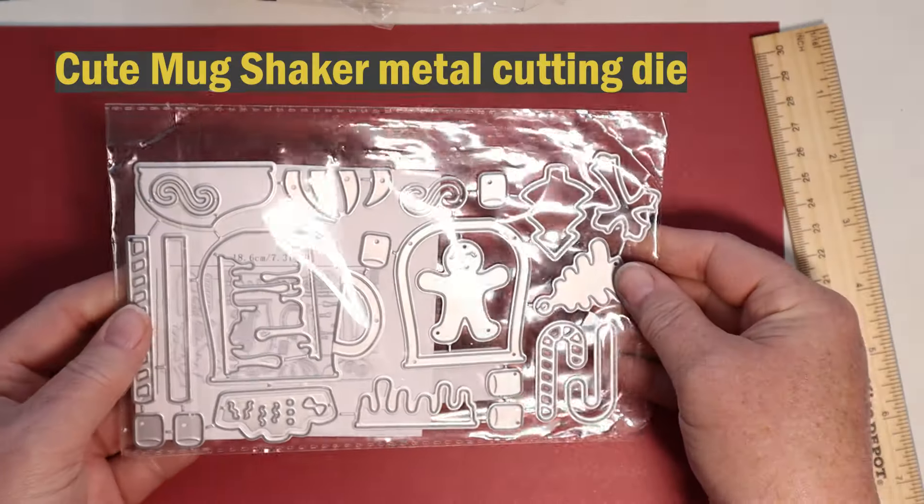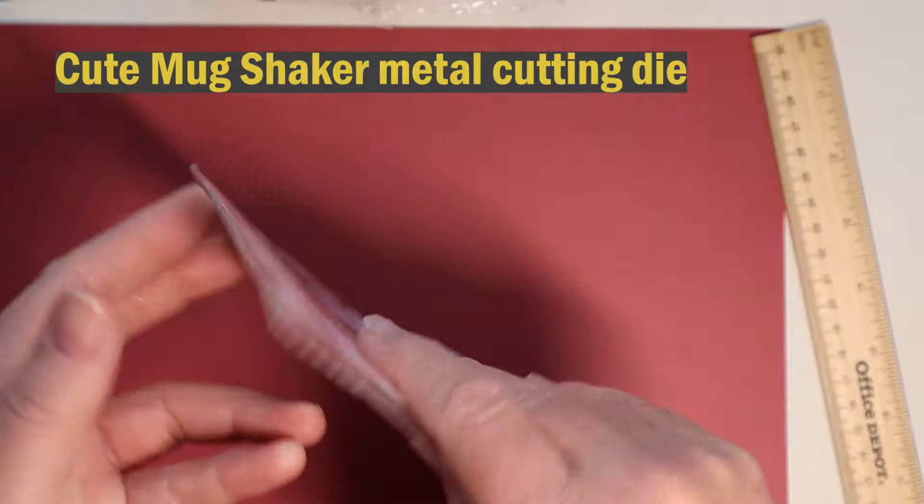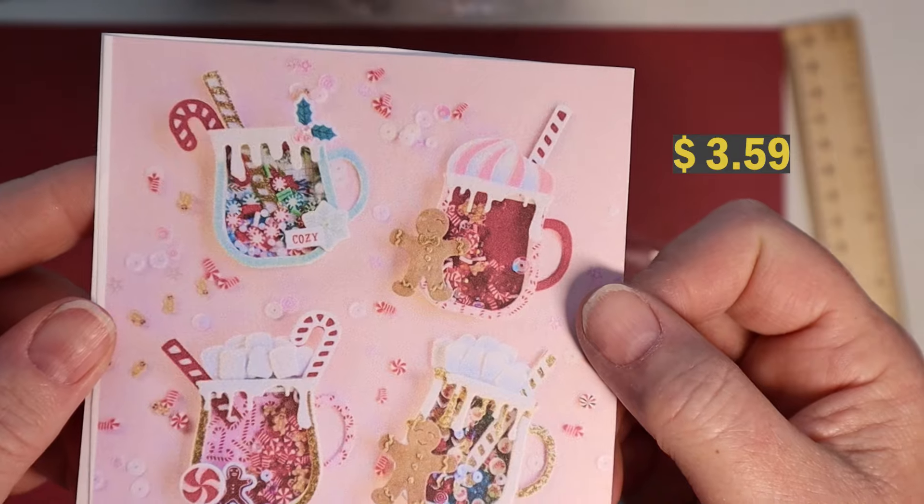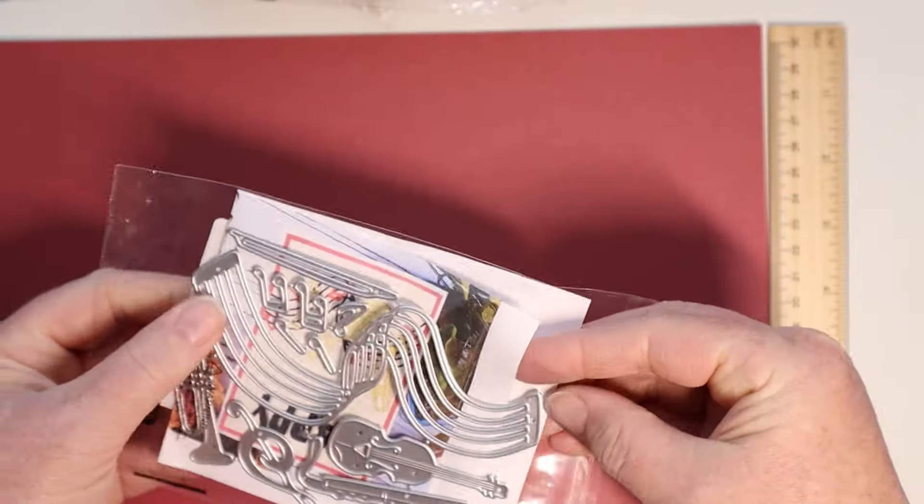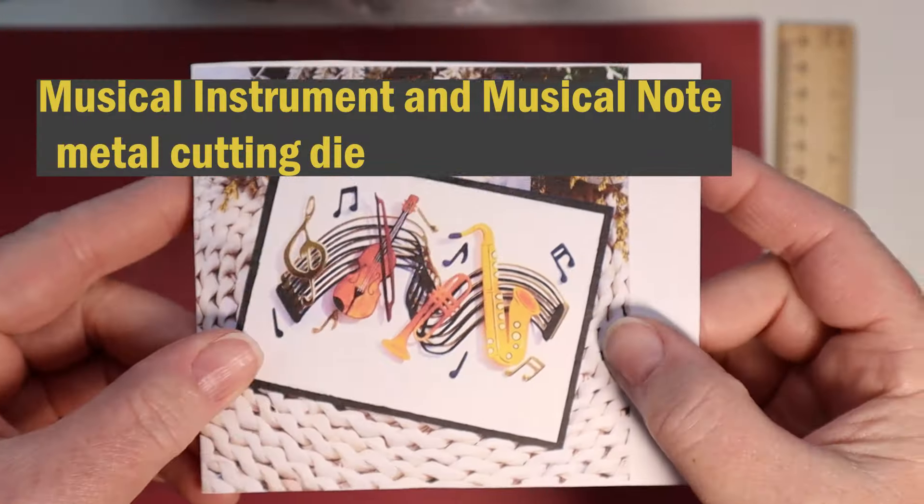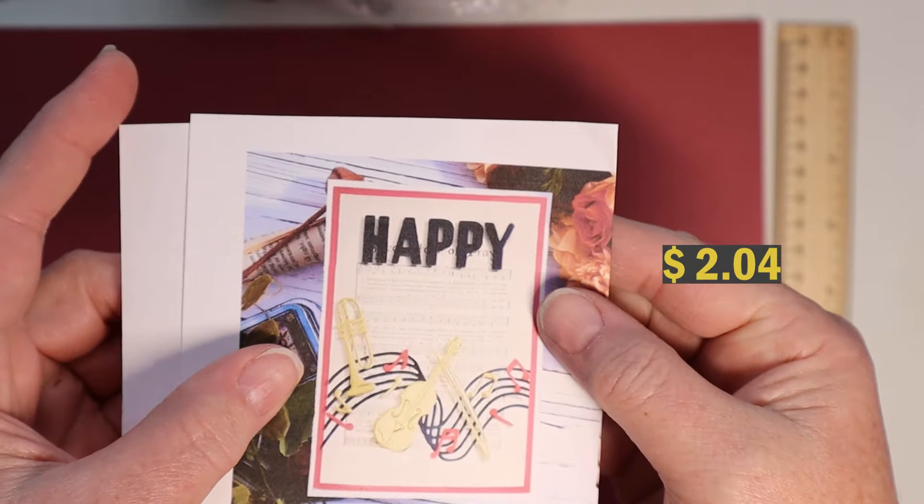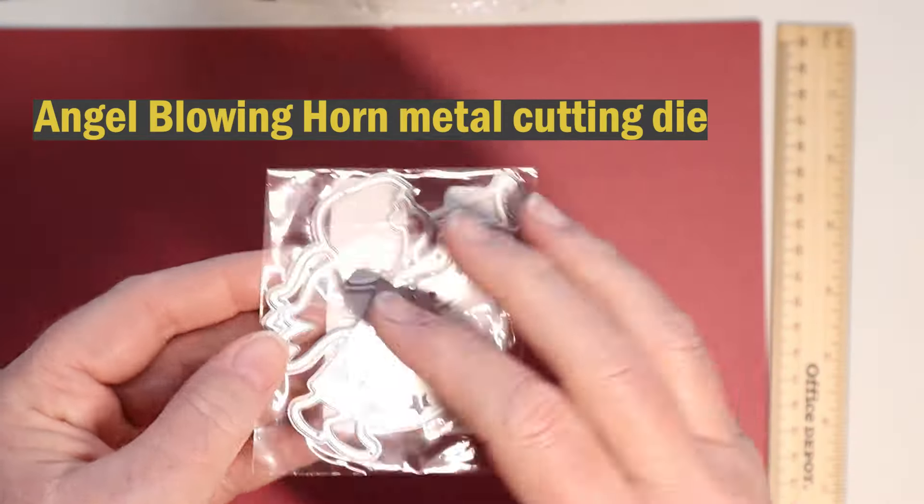So I'm kind of getting ready a little bit for Christmas here. This is a cute mug shaker cut and die set. And so I print out some of these pictures that was on the advertisement. So I know what I'm getting when it comes because Temu is not really good about telling you with instructions and pictures and stuff. So I print these out and I put in my dies and my stamps and stuff. So I kind of have an idea of what it's supposed to look like. And so these metal dies are good.